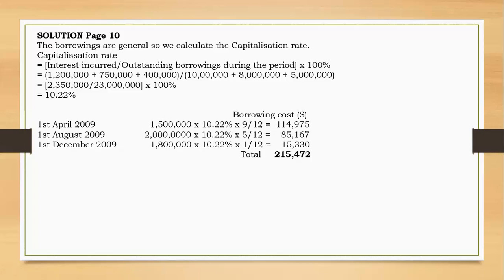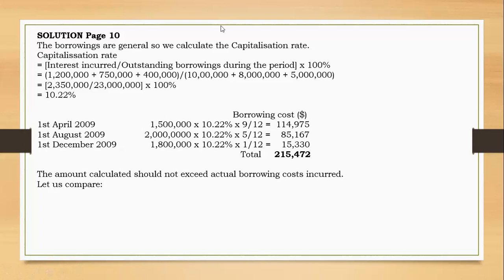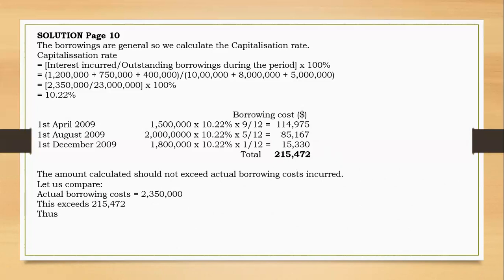As for general borrowing, the borrowing costs computed should not exceed the actual borrowing costs. The actual borrowing costs are the sum of the interest: $1.2 million, $750,000, and $400,000, which equals $2,350,000. Since the actual borrowing cost of $2,350,000 exceeds the computed $215,472, we are fine to capitalize it. The remaining difference of $2,350,000 minus $215,472 will be expensed. Therefore, borrowing costs of $215,472 should be capitalized.